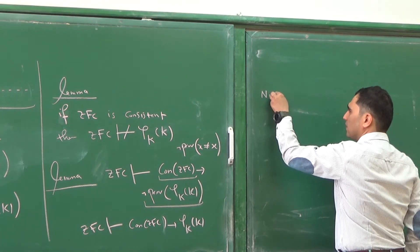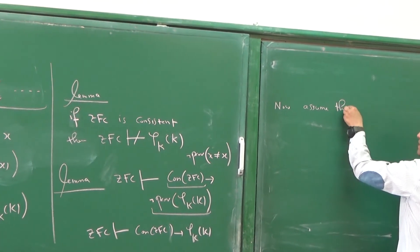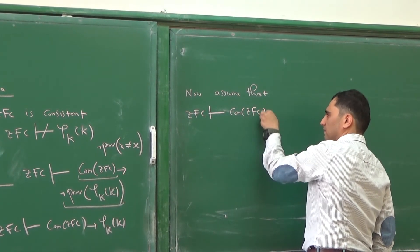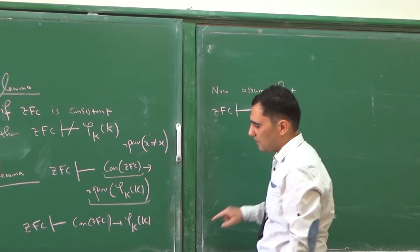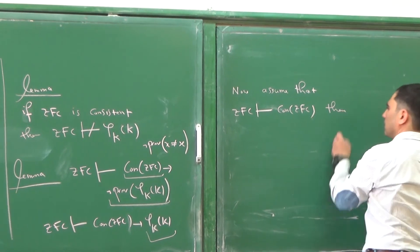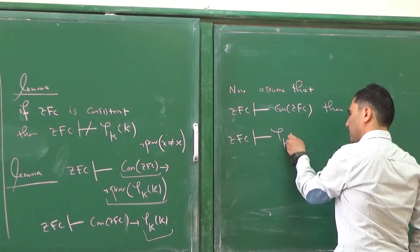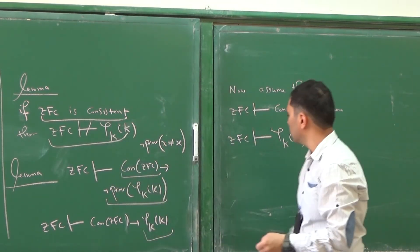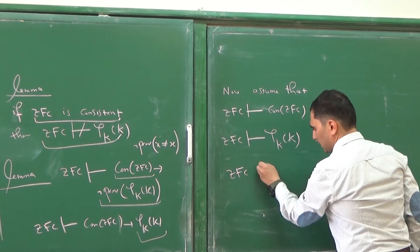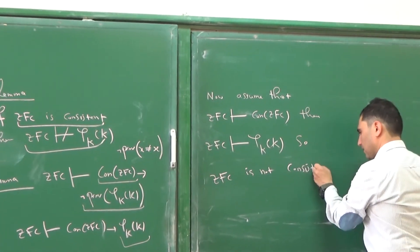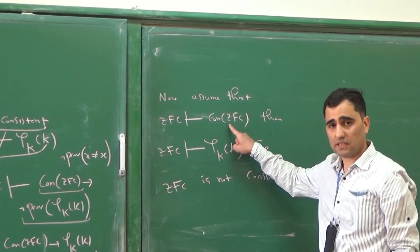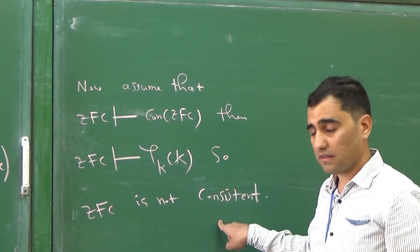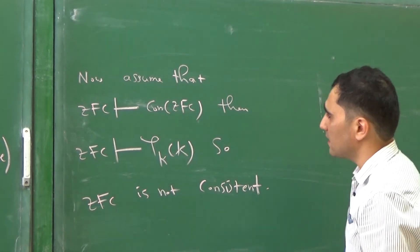Assume that ZFC can prove the consistency of itself. If ZFC proves that ZFC is consistent, then ZFC proves phi_k(k). But when ZFC proves phi_k(k), then ZFC is not consistent — because phi_k(k) says it's unprovable. So if you prove in ZFC that ZFC is consistent, then ZFC is not consistent. That's the only way you can prove the consistency of ZFC, and that's Gödel's second incompleteness theorem.